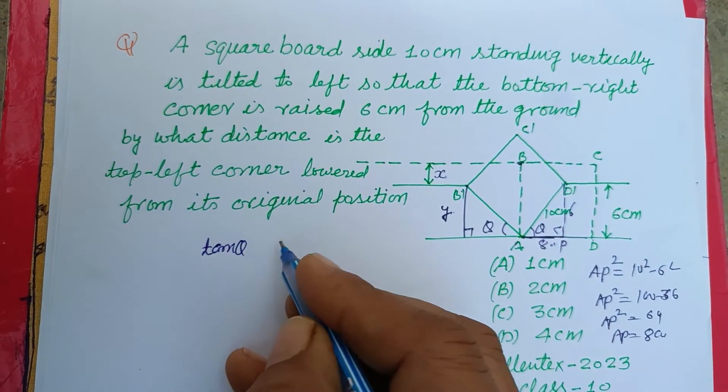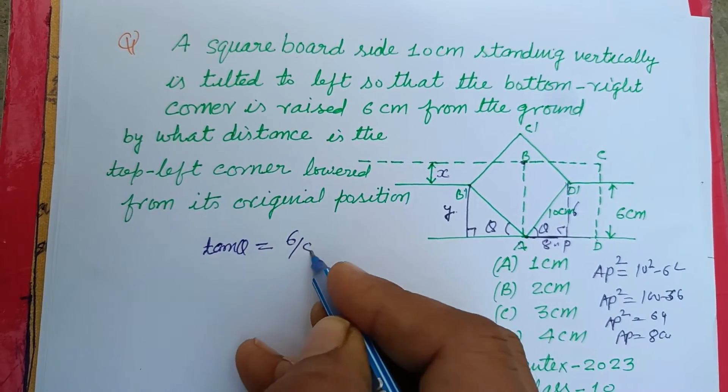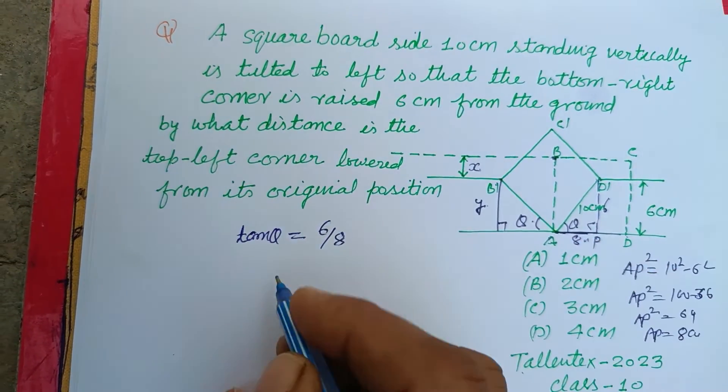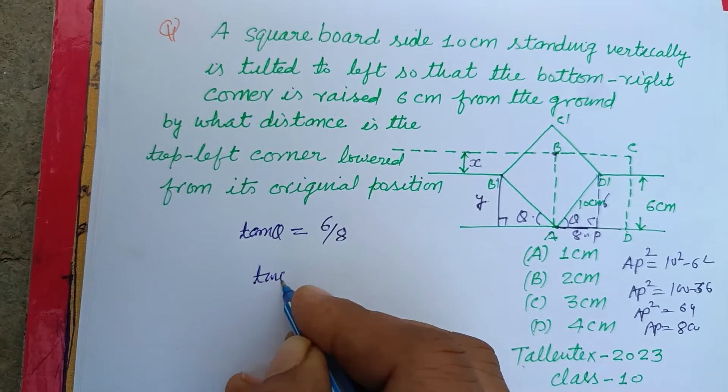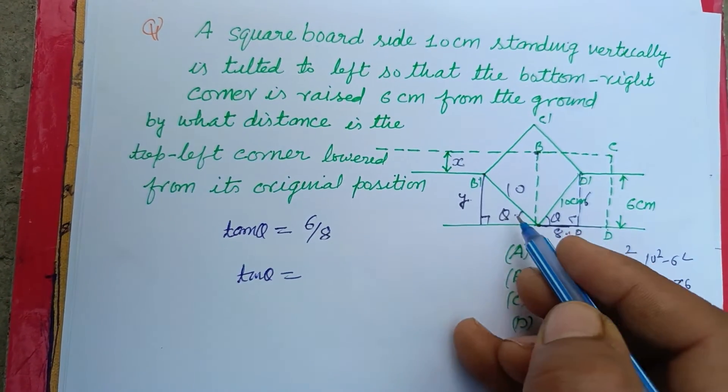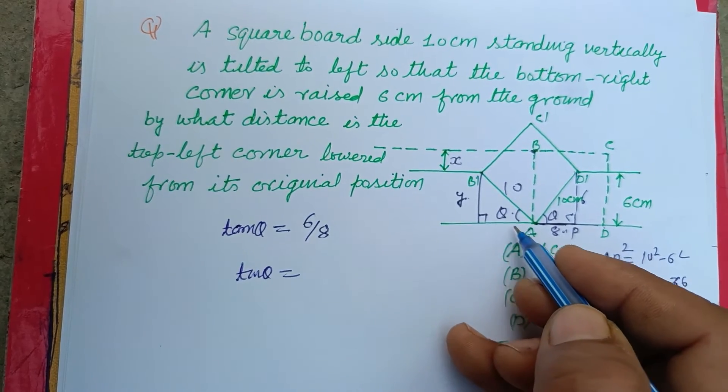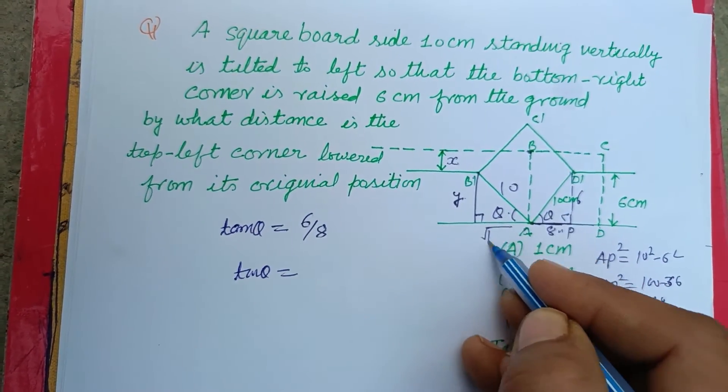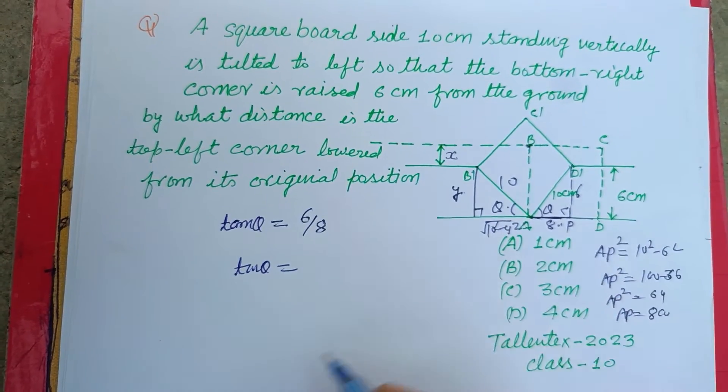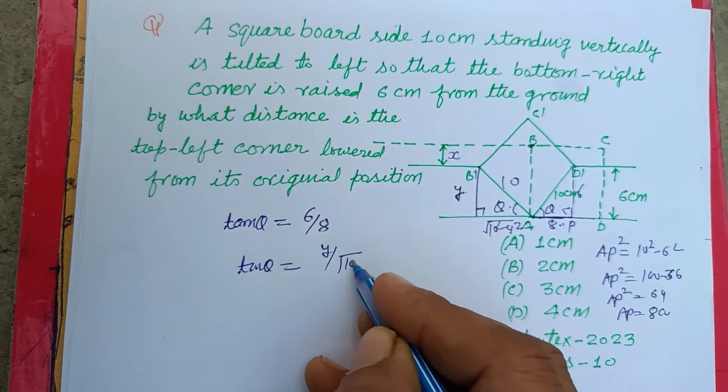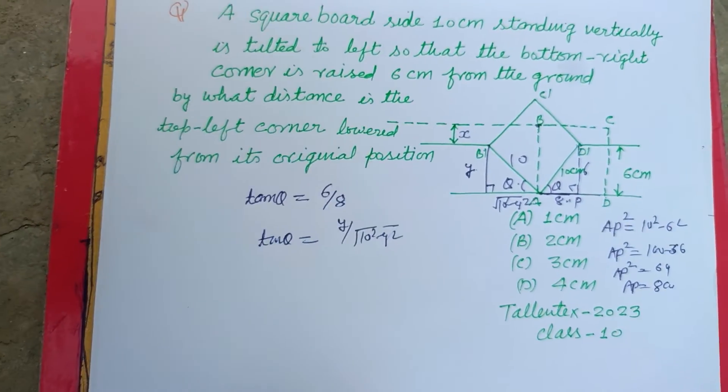Similarly, from this triangle, tan theta equals, this is 10 and this will be 10 square minus Y square. So Y upon square root of 10 square minus Y square.